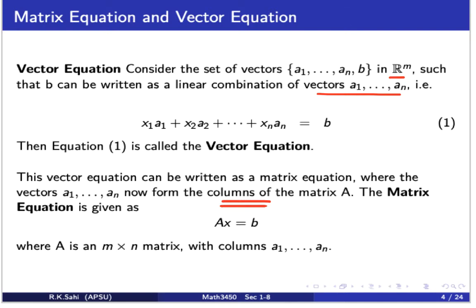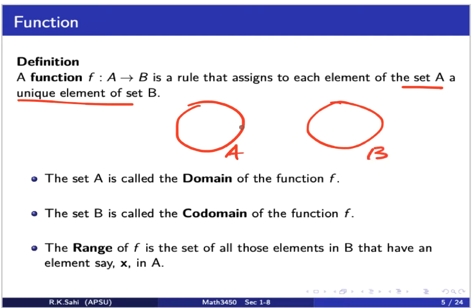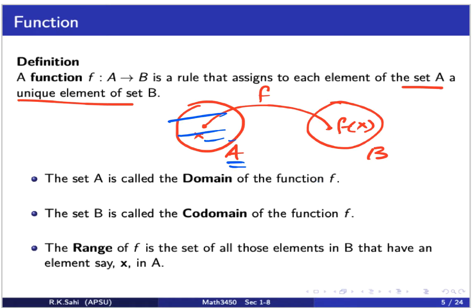Now let's look at the definition of a function. A function is a rule that assigns to each element of the set A a unique element of the set B. Graphically, you can think of these two sets as A and B, where a function assigns an element x of A to an element f(x) of B. The whole set A is called the domain of the function, and the whole set B is called the codomain of the function f.